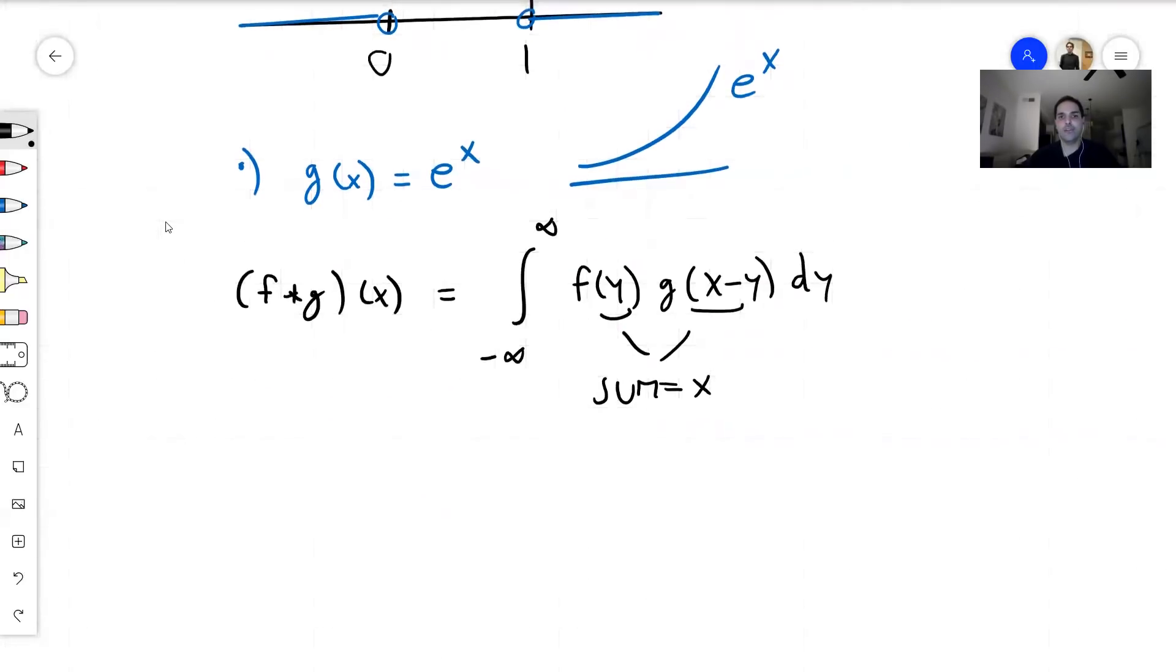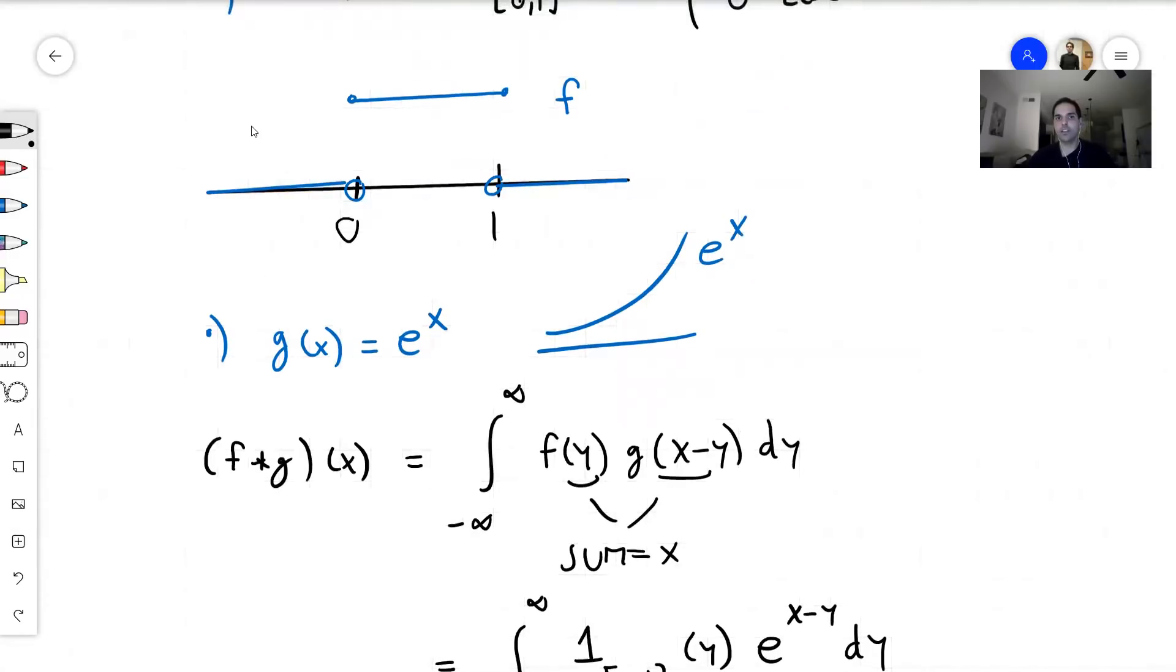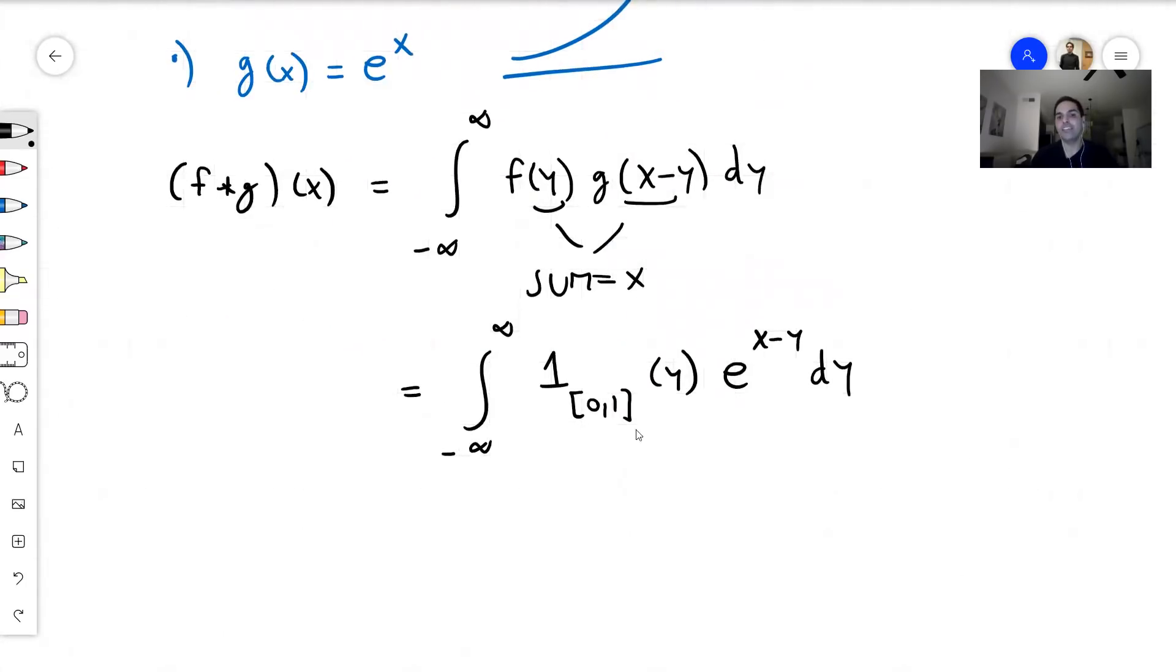And then just use the definition. So it's the integral from minus infinity to infinity of the indicator function from (0,1) of y, and then g is just e to the x minus y, dy. And remember the indicator function is 0 outside of (0,1). So basically y is just between 0 and 1.